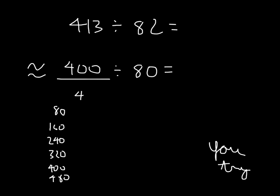we can rewrite that as we evaluate it, for 400 divided by 10 first, and then divided by 8. 400 divided by 10 is 40, 40 divided by 8 is 5. So our estimated quotient is 5,